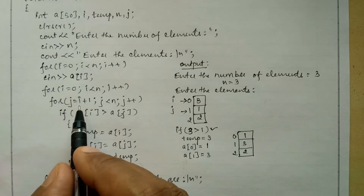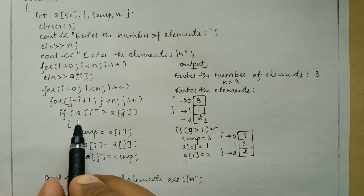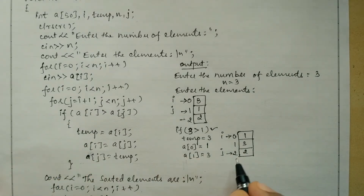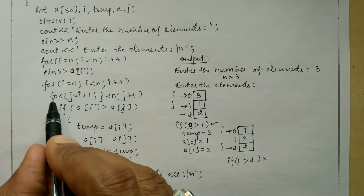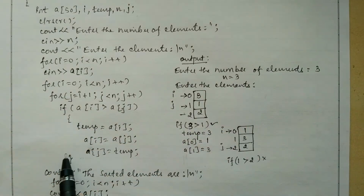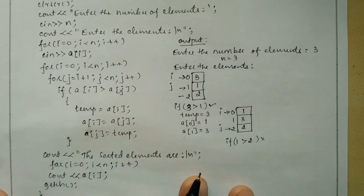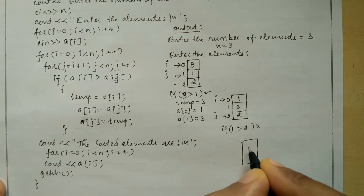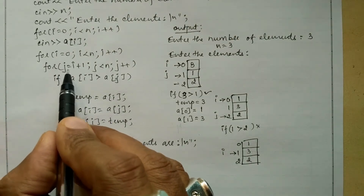Control transfers back to the inner for loop, incrementing j by 1, so j now points to index 2. We check: a[0] holds 1, a[2] holds 2 — is 1 greater than 2? No, condition fails. j increments to 3; 3 is not less than 3, so the inner loop ends. Control transfers to the outer for loop, incrementing i by 1. Now i points to 1, j becomes i plus 1 which is 2. The array currently holds 1, 3, 2.